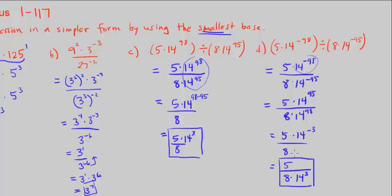This is converting all the expressions, reducing them into a simpler form using smaller bases. This ends chapter 1 of CPM Pre-Calculus number 117.